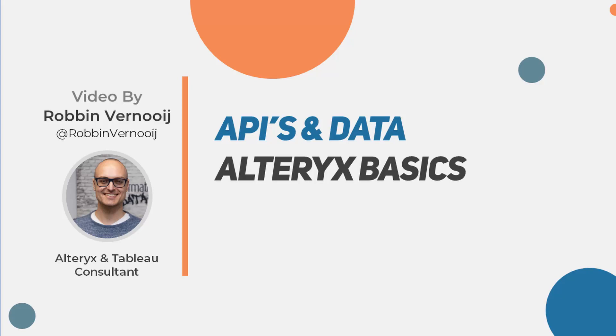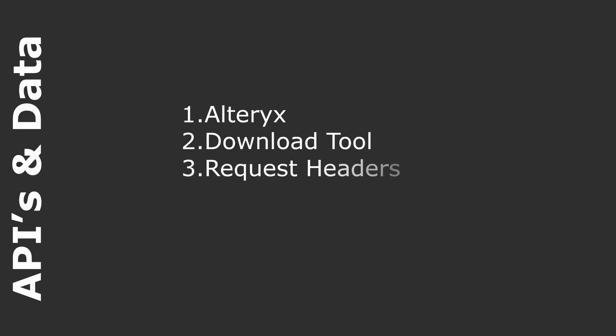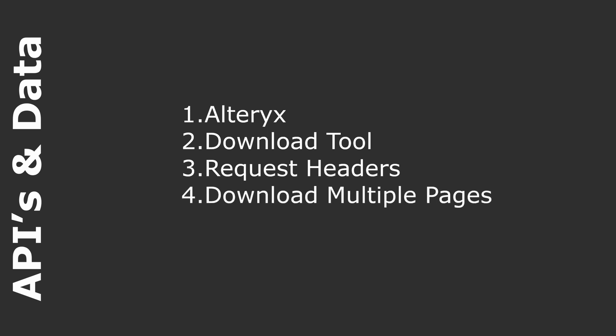Hi, my name is Robin and welcome back to the second video in a series on APIs and data. Today I would like to use Alteryx tools to automate some of our API requests. In this tool we have a download tool available, and with the download tool we can input request headers provided by the API. I'll finish off by showing you an example of how to download multiple pages from an API. So let's dive right into it.